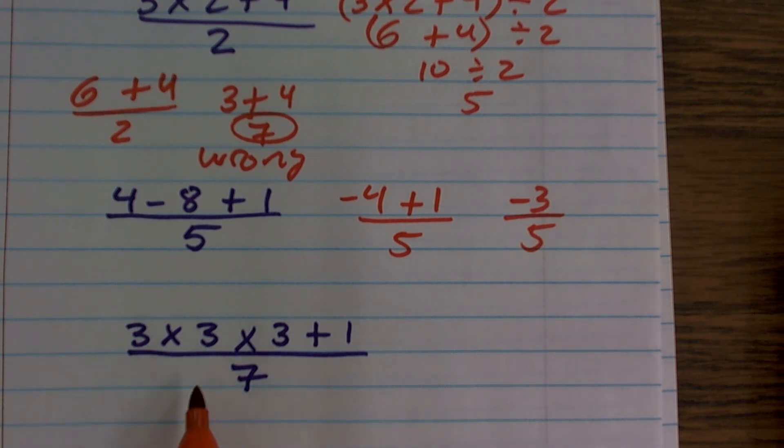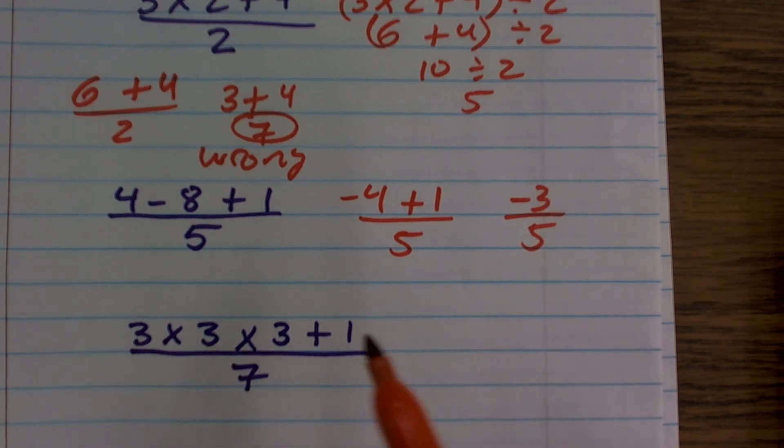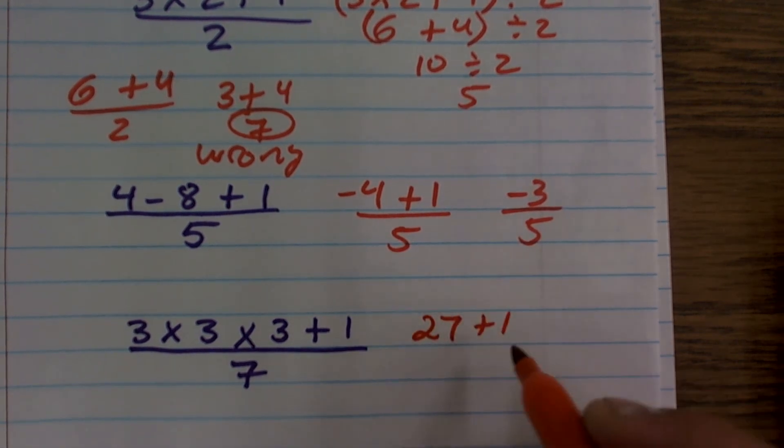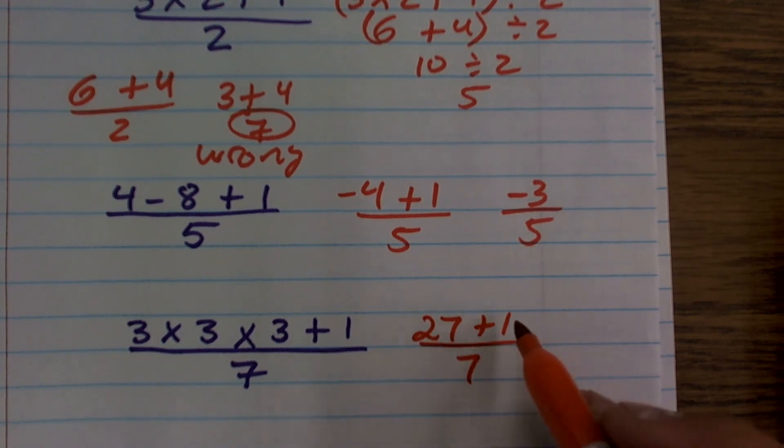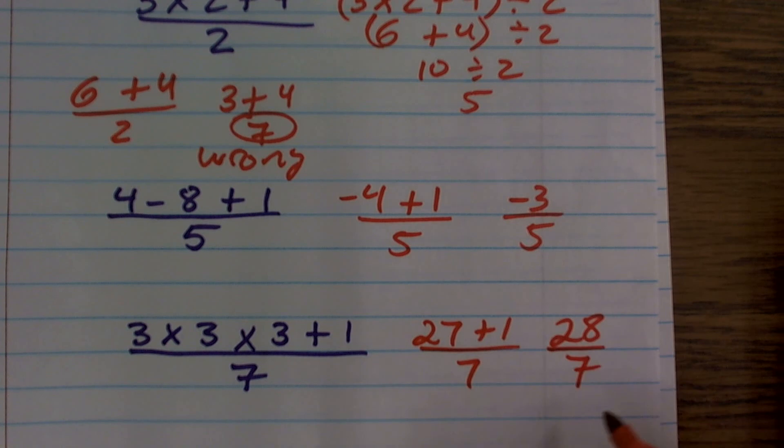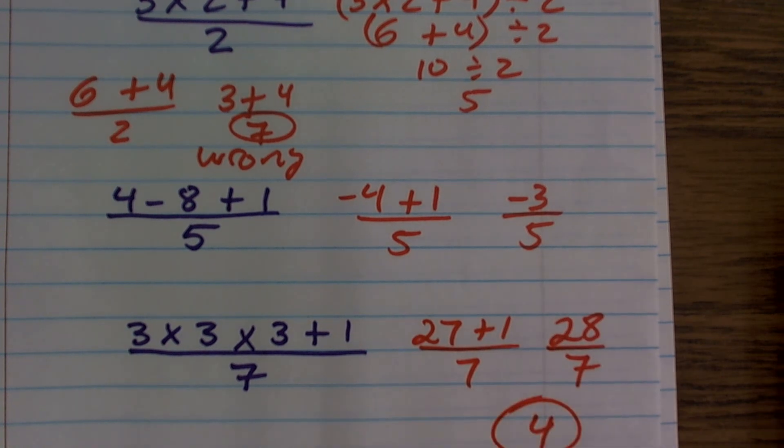So for these x's, I have 3 times 3 times 3 plus 1. Again, just use your rules, 3 times 3 times 3. 3 times 3 is 9, times 3 is 27. So I'm going to have 27 plus 1 over 7. 27 plus 1 is going to give me 28 over 7, which ends up equaling 4, which is my correct answer.